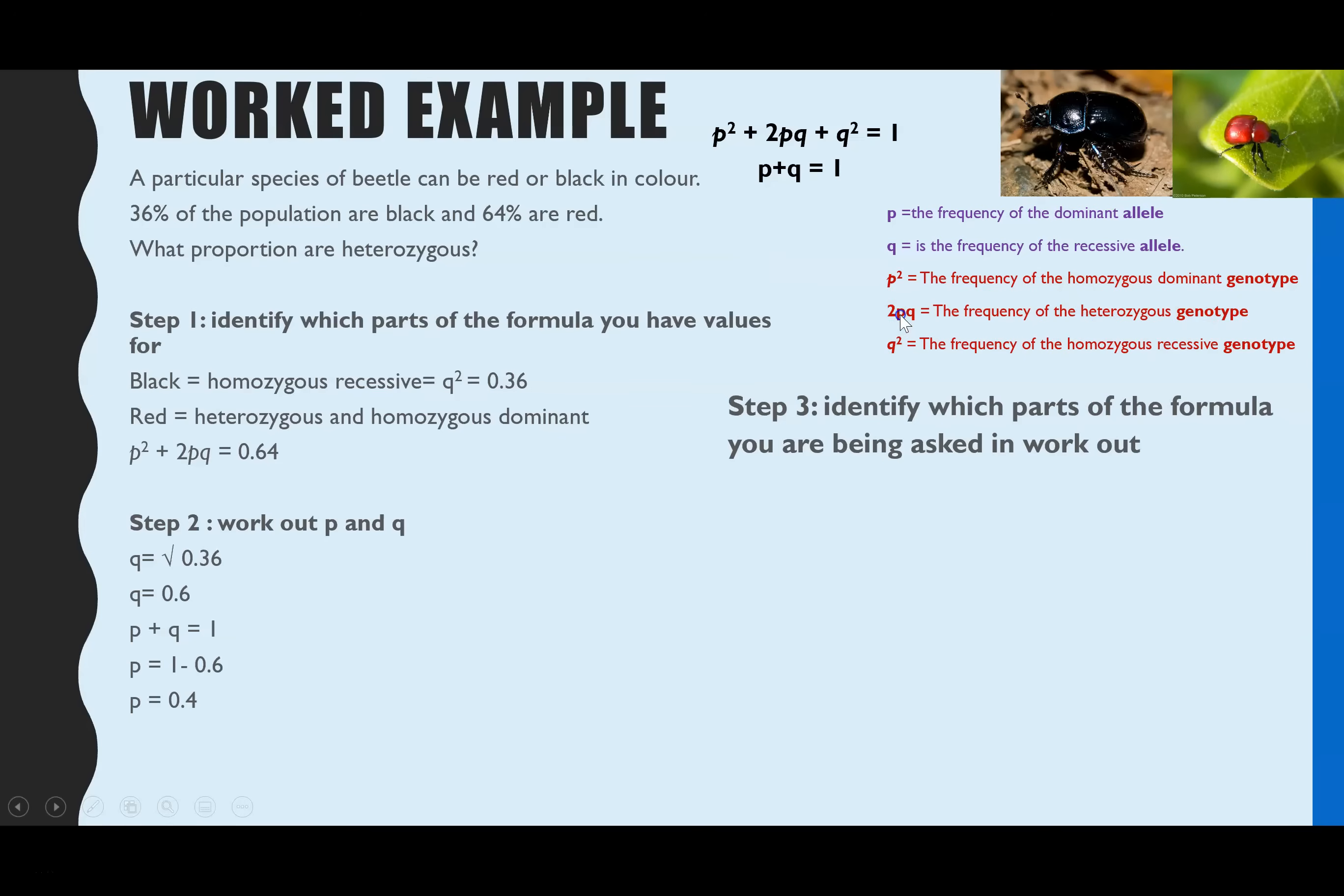It won't always be heterozygous they're asking you to work out. They could ask you to work out the dominant allele frequency, the frequency of the recessive allele, they could ask homozygous dominant. They could ask any component. It just so happens that the two I've gone for are heterozygous.